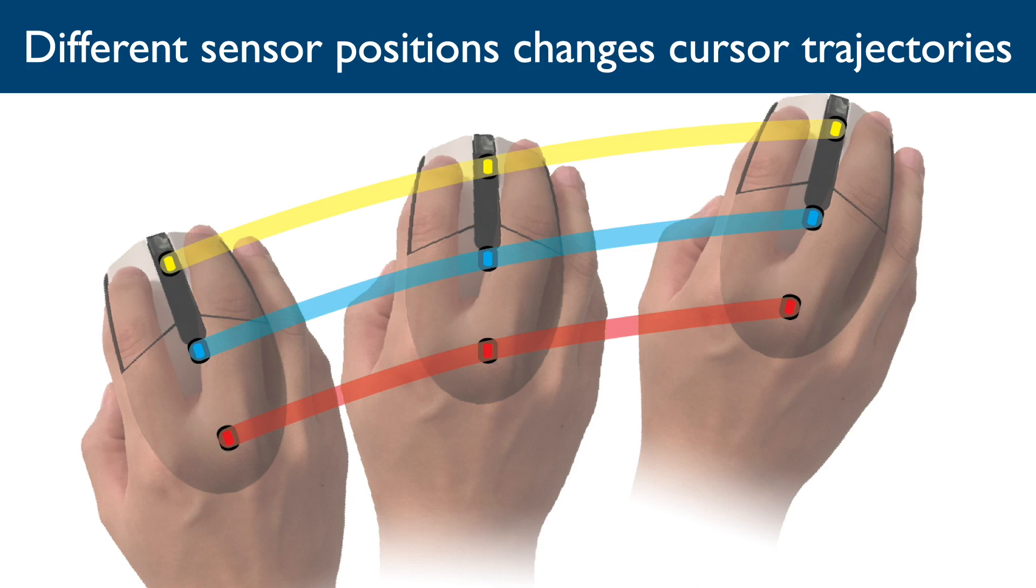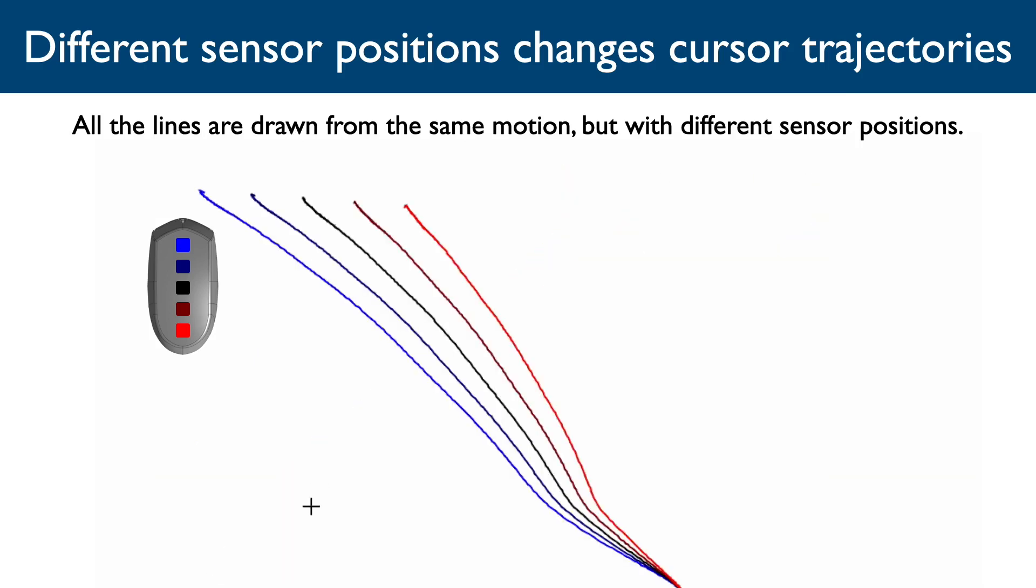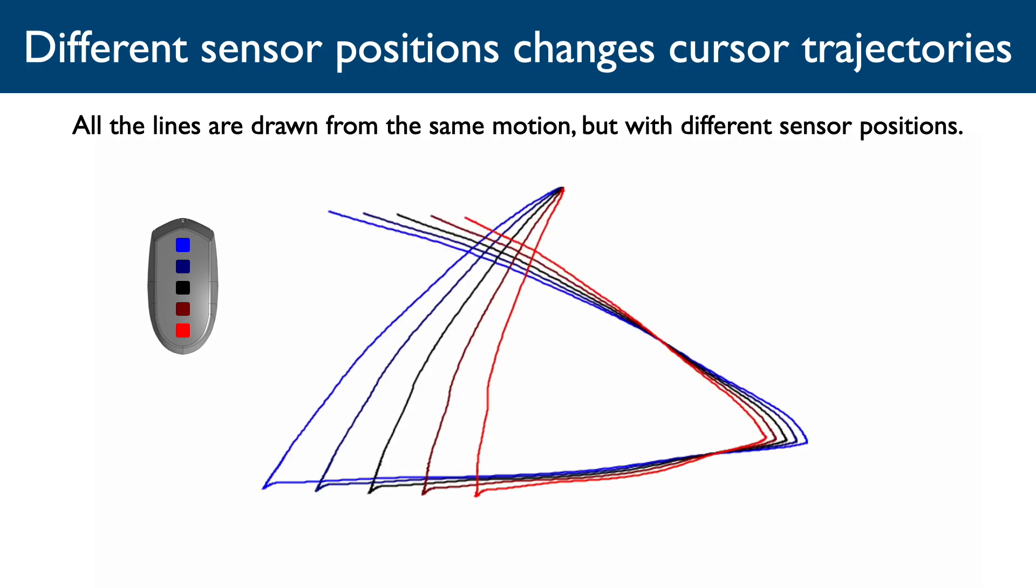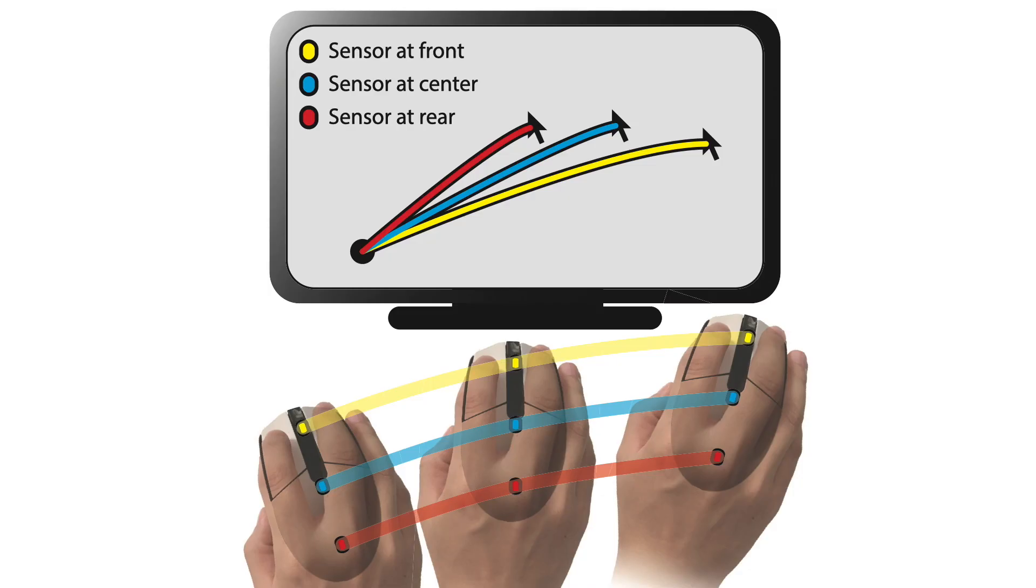Also, the sensor at different positions changes the cursor's trajectories. All the lines there are drawn from the same motion but with different sensor positions. The blue line is drawn from the front sensor and the red line is drawn from the rear sensor. A same motion may result in different cursor movements, so it may introduce a difficulty in pointing.